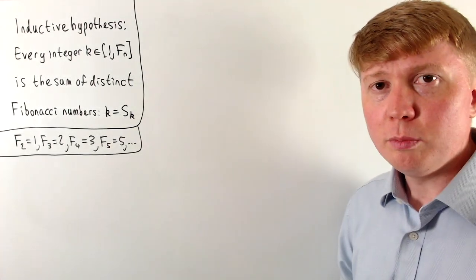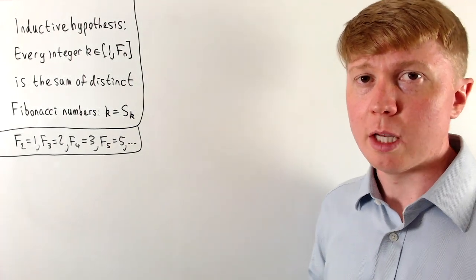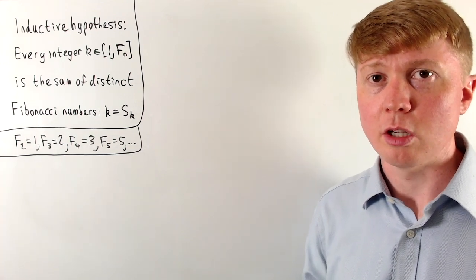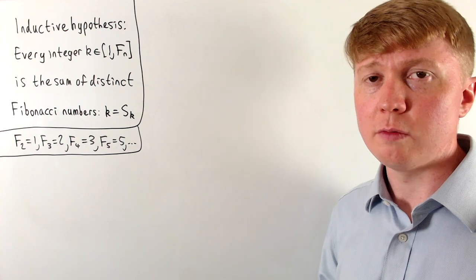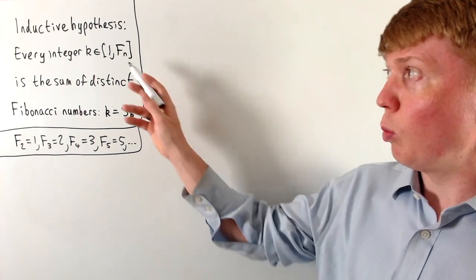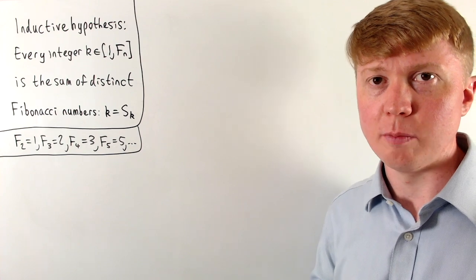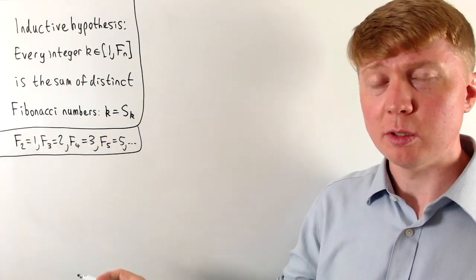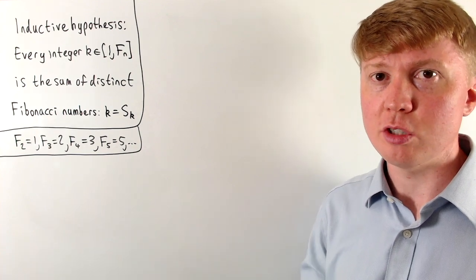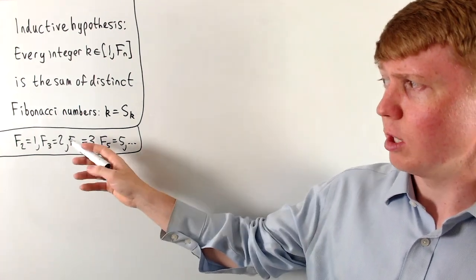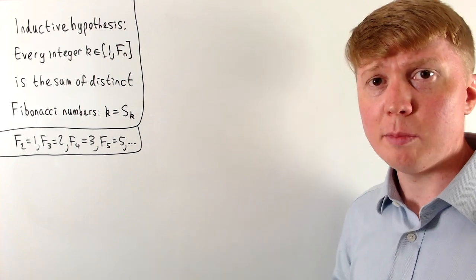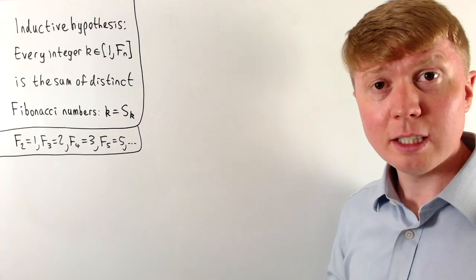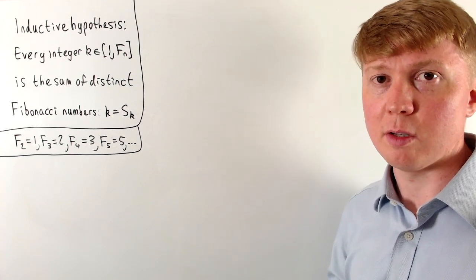For our more formal proof, we're going to use a strong induction argument, where instead of just assuming the result holds for the previous integer, we assume it holds for all previous integers from 1 up to Fn, the nth Fibonacci number. We're labelling them starting with F2 as 1, since F1 is also 1, so the third Fibonacci number is 2, and so on. The inductive hypothesis is that every integer from 1 up to Fn can be written as the sum of distinct Fibonacci numbers.